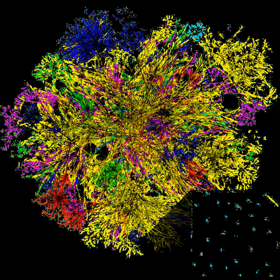These social network maps are then data mined to extract useful information such as personal interests, friendships and affiliations, wants, beliefs, thoughts, and activities. Many US government agencies such as the Defense Advanced Research Projects Agency (DARPA), the National Security Agency (NSA), and the Department of Homeland Security are currently investing heavily in research involving social network analysis.